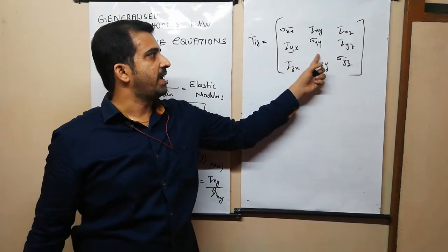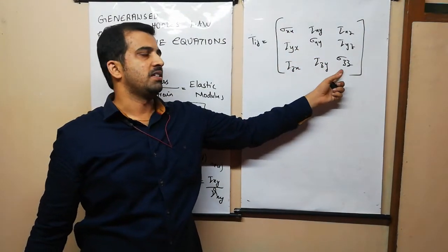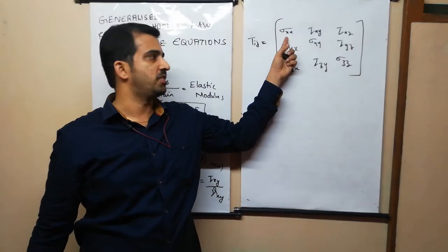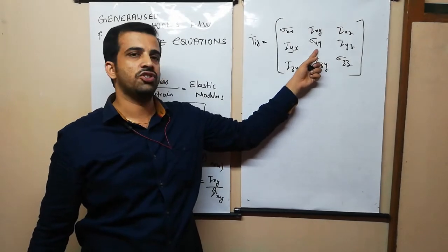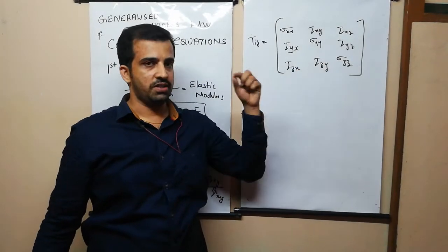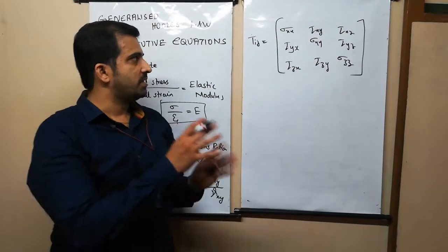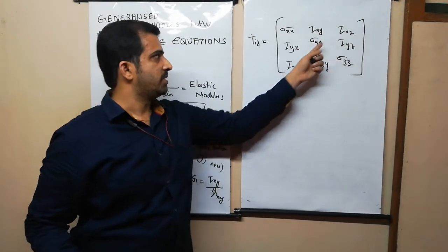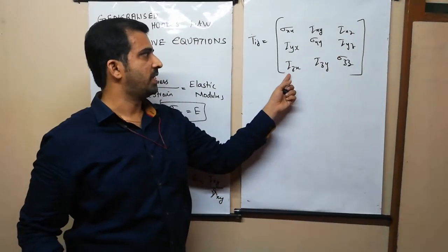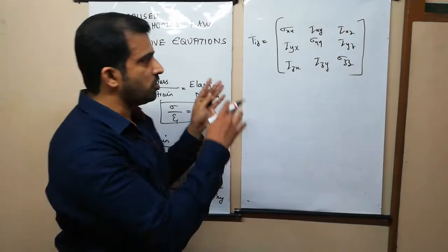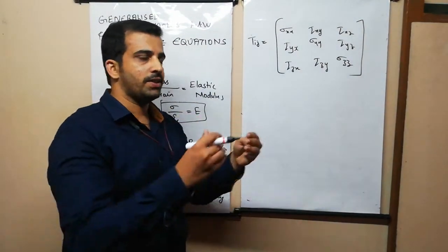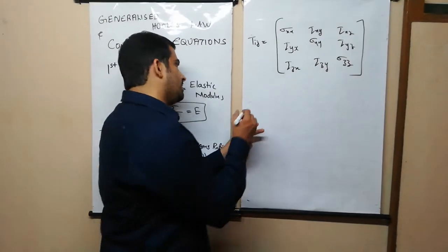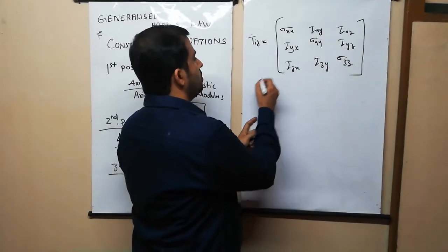The diagonal elements sigma_xx, sigma_yy, sigma_zz are the normal stress components — stress along the x, y, and z directions respectively. The off-diagonal elements are the shear stresses: tau_xy, tau_xz, tau_yx, tau_yz, tau_zx, tau_zy. In total there are nine rectangular stress components, but in effect we take only six because of the equality of cross shear.